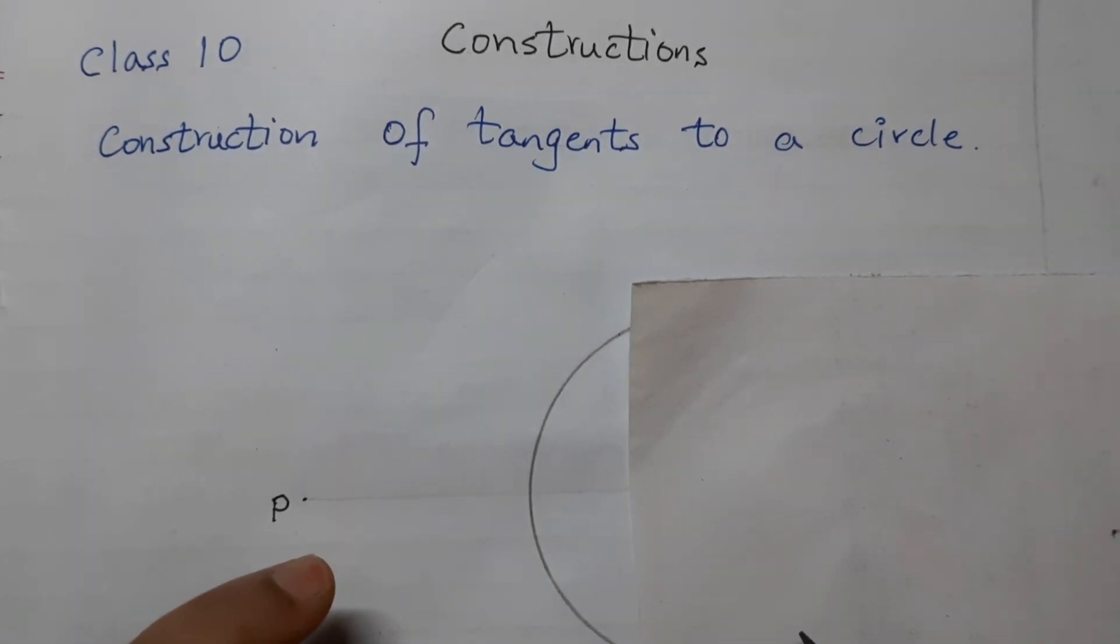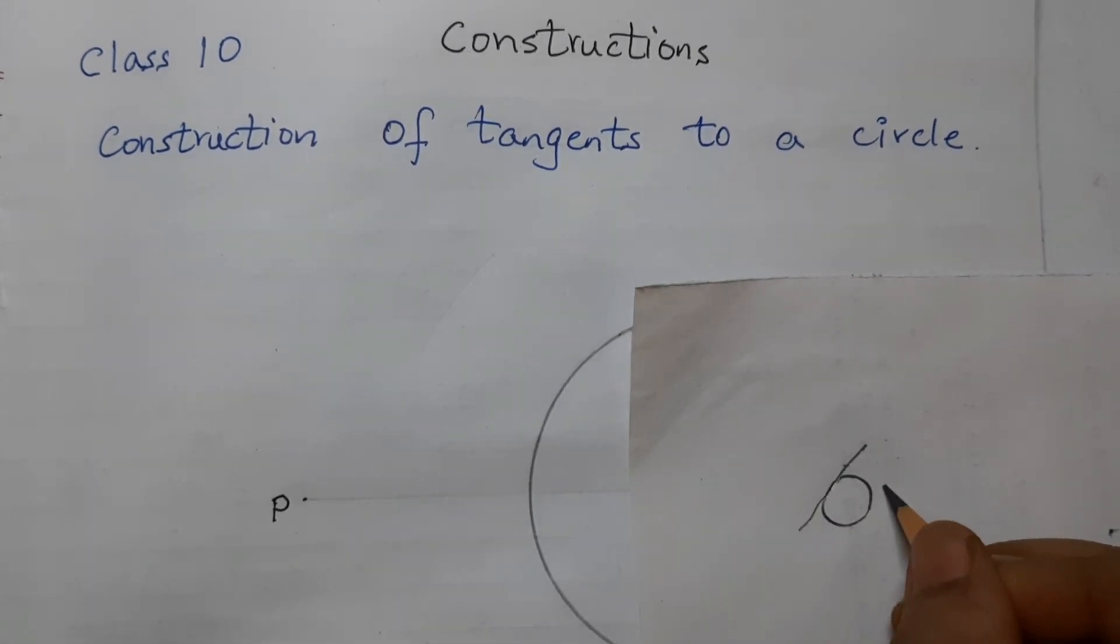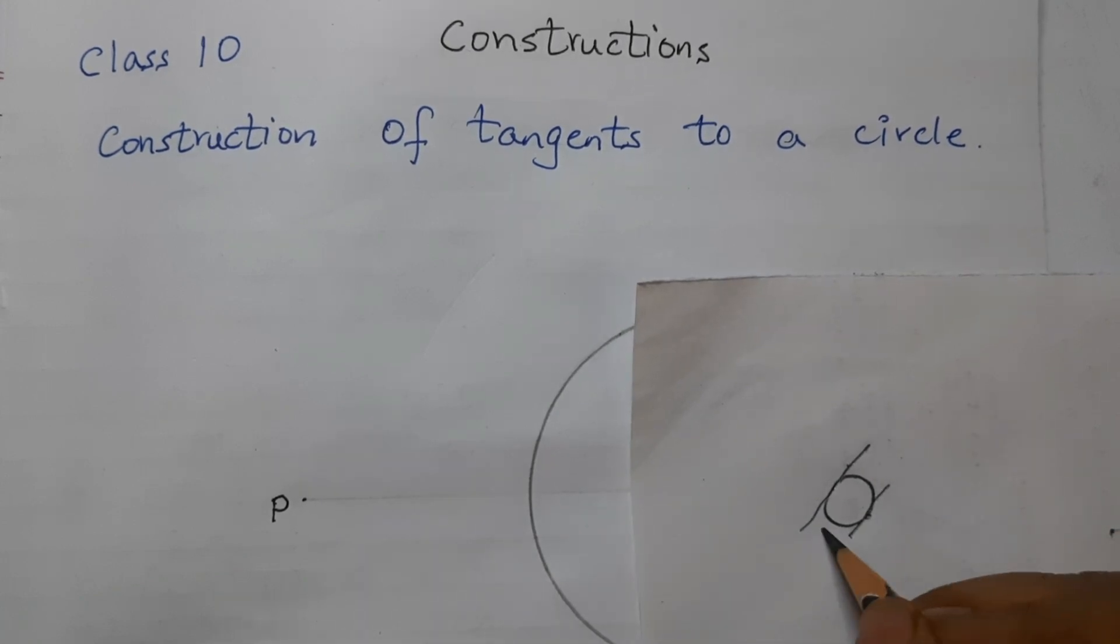A tangent is a line that touches the circle at just one point. So if this is your circle, this line which is touching the circle at just one point is a tangent. This is also a tangent, just touching at one point. We can have many tangents. Each point would have one tangent.